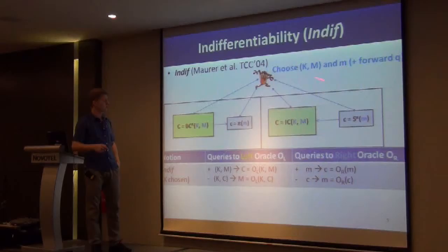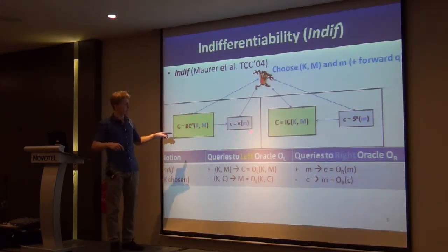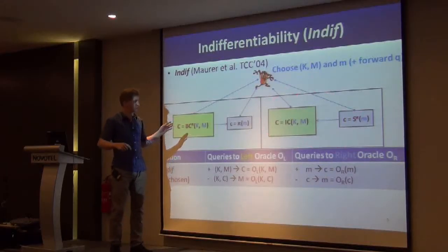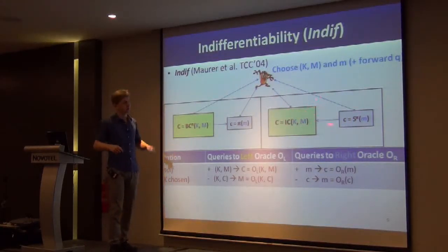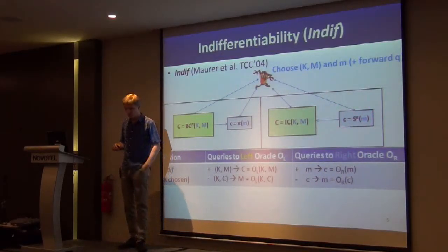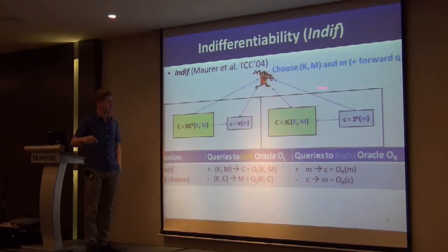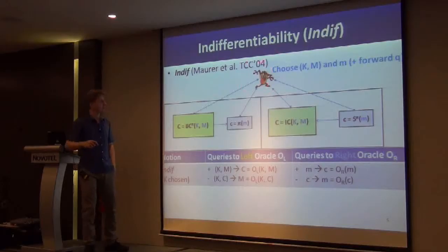Here we have two worlds. The composed world has the actual structure of your block cipher, which may depend on some idealized primitive — a permutation. In the right world, you have the ideal cipher and a simulator, which simulates the behavior of this permutation. The simulator works on the side of reconstruction, trying to pretend that the right world is actually decomposable — though it's not. The adversary's task is to distinguish between those two worlds.